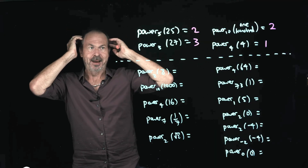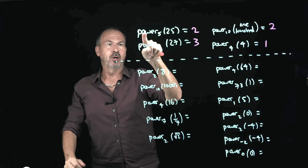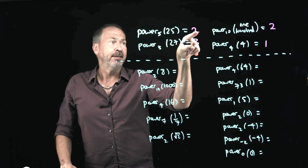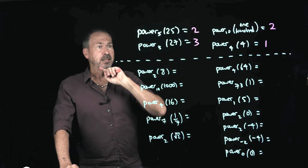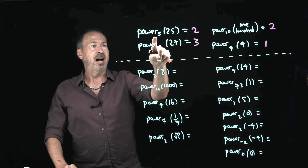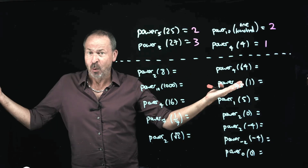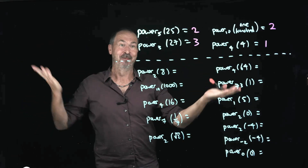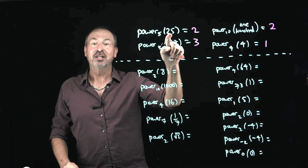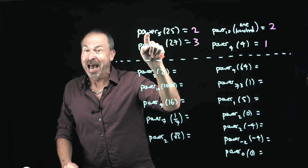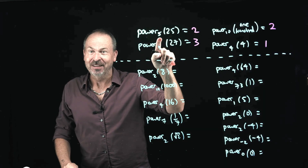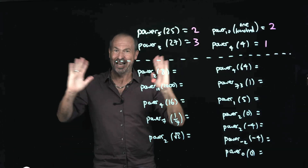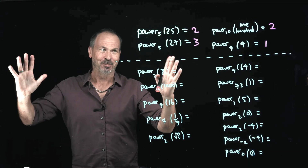The first one has the word 'power', subscript 5, number 25, and the number 2 as the answer. So there's something about 5 and 25 and 2 that relate — probably to do with powers. I can see right now: 5 squared is 25. The power of 5 that gives the answer 25 is 2. 5 to the 2 gives 25. I think that's what's going on here.